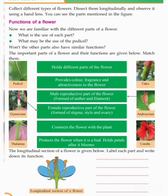The section of a flower is given below. Label each part and write down its function. Now the flower diagram is shown below — complete it back in class.